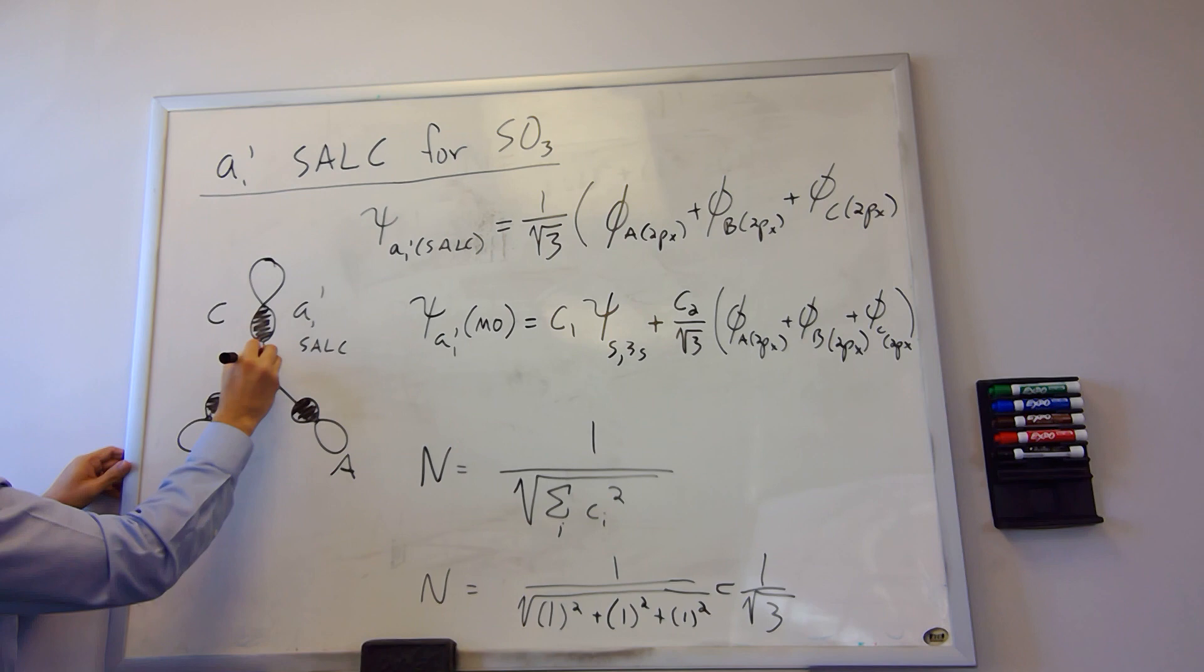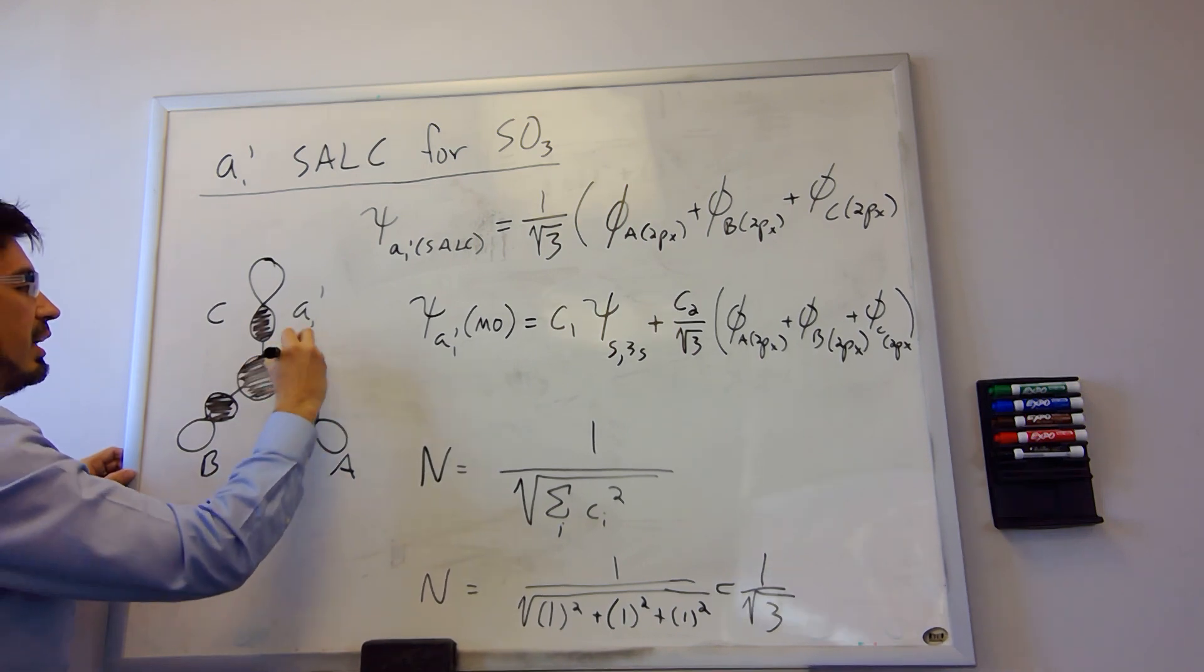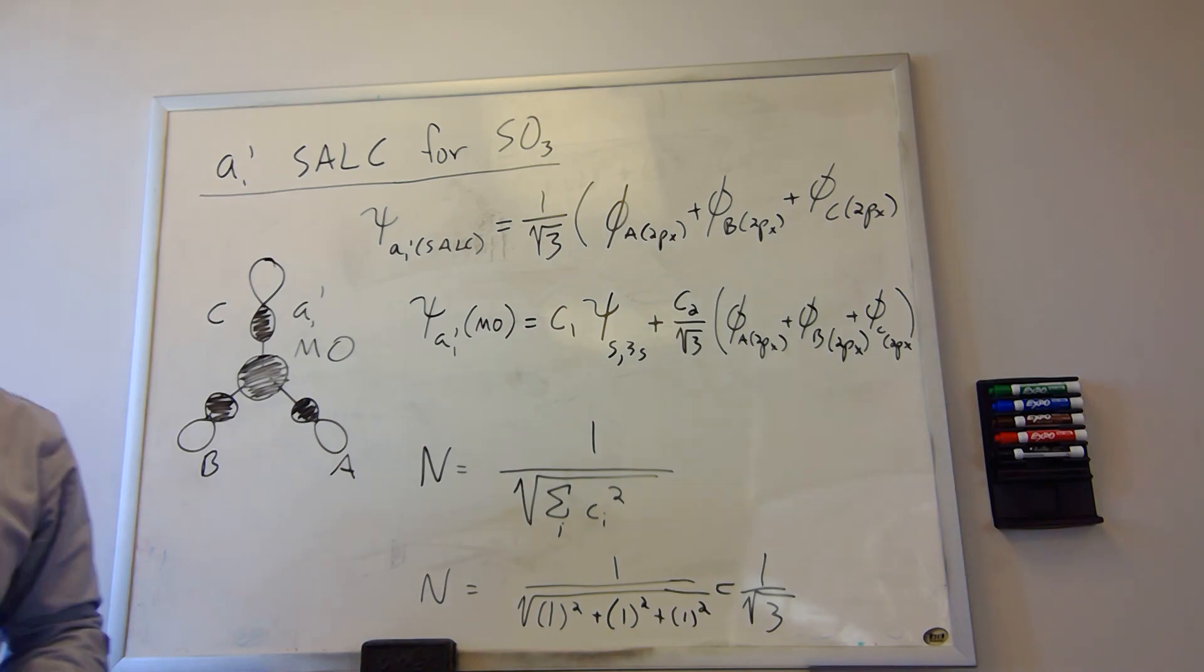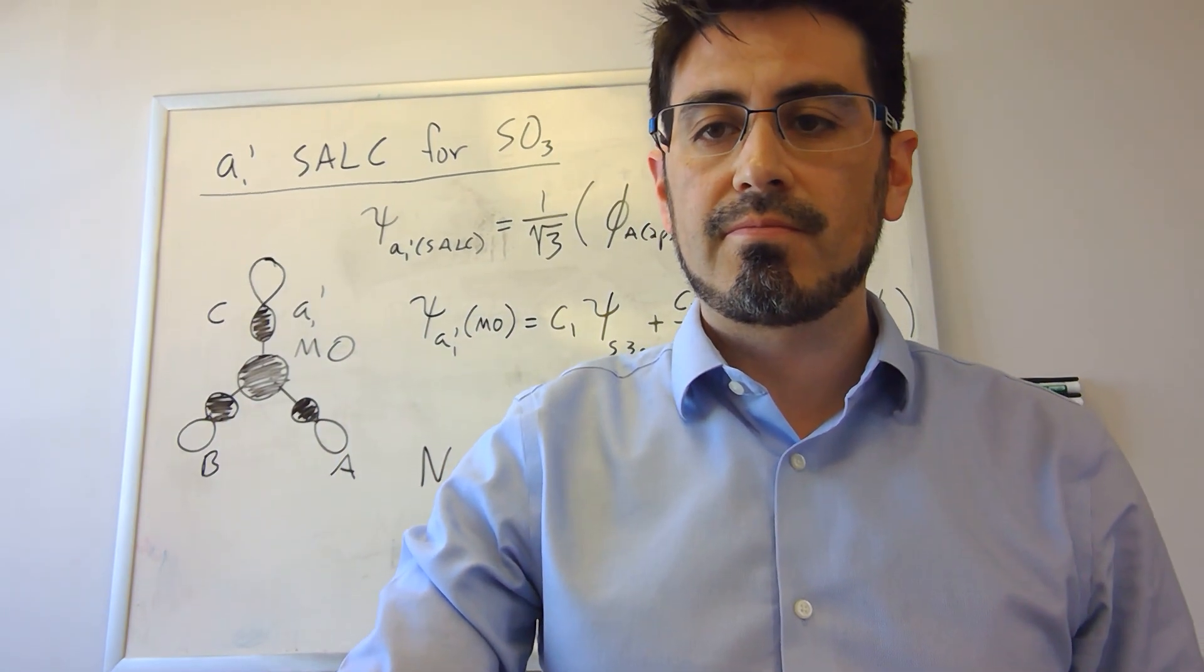And so we would just add now the 3s orbital. So this is now the A1 MO. You can see how it's all in phase now.